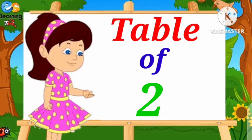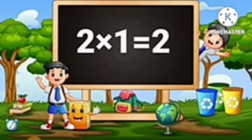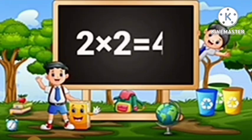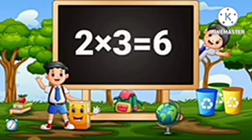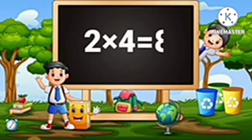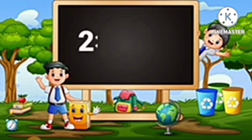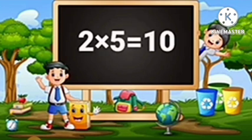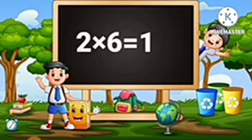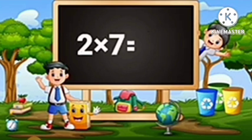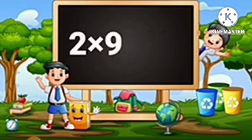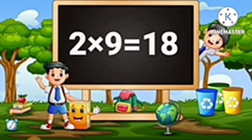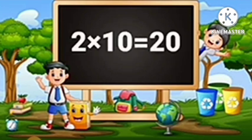Table of Two. Two-One's are Two. Two-Two's are Four. Two-Three's are Six. Two-Four's are Eight. Two-Five's are Ten. Two-Six's are Twelve. Two-Seven's are Fourteen. Two-Eight's are Sixteen. Two-Nine's are Eighteen. Two-Ten's are Twenty.